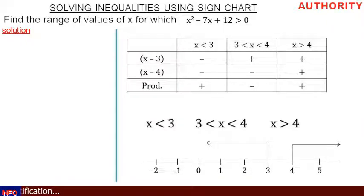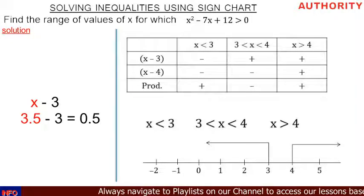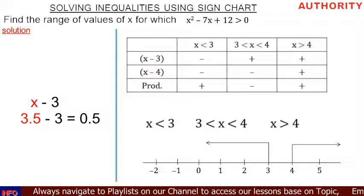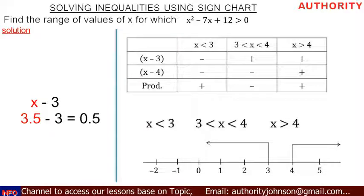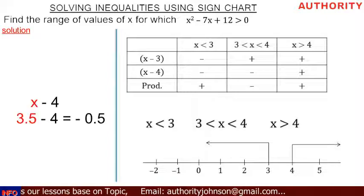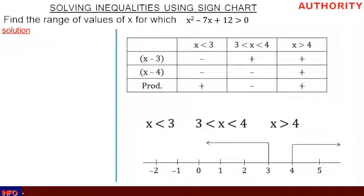For the second range, x greater than 3 but less than 4, let's pick 3.5. In x minus 3: 3.5 minus 3 equals 0.5, a positive number, so we write plus. In x minus 4: 3.5 minus 4 equals minus 0.5, so we write minus. Under the product, plus times minus gives us minus.